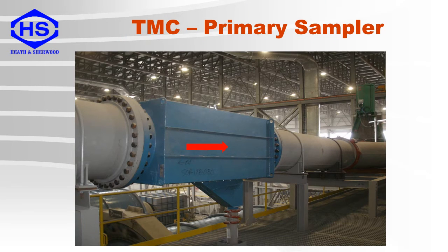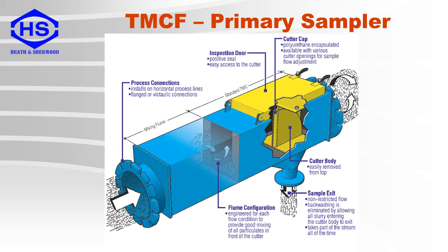Here is another example of a TMC sampler, only this one is for a larger process line. The arrow shows the direction of the process flow. This is another version of a launder sampler which is a TMCF. In this case there is a flume which is used to mix the slurry before the cutter for better sample representativity.